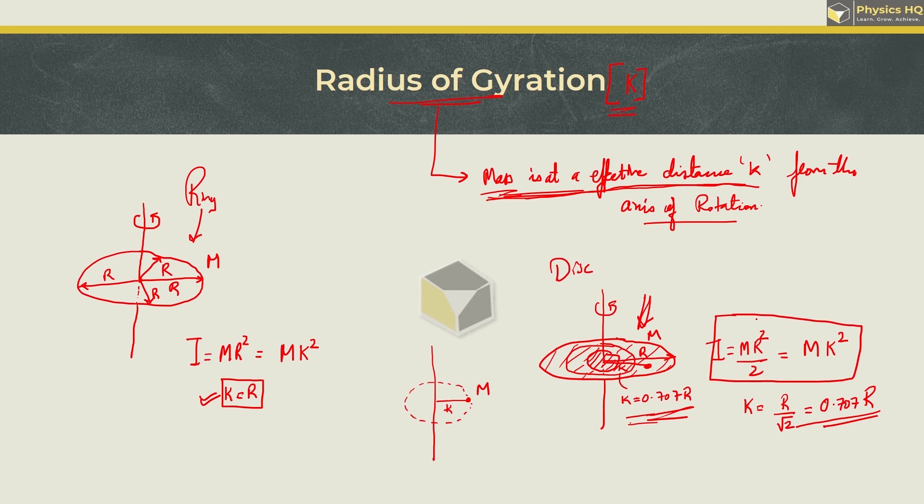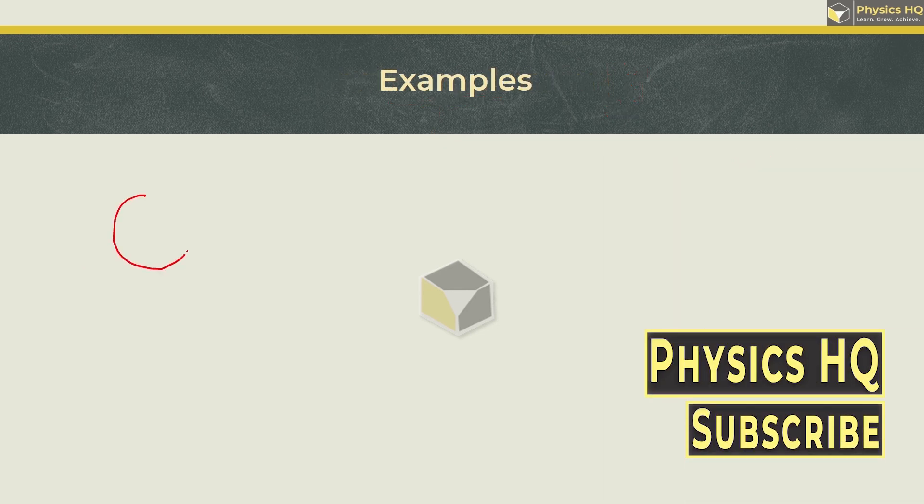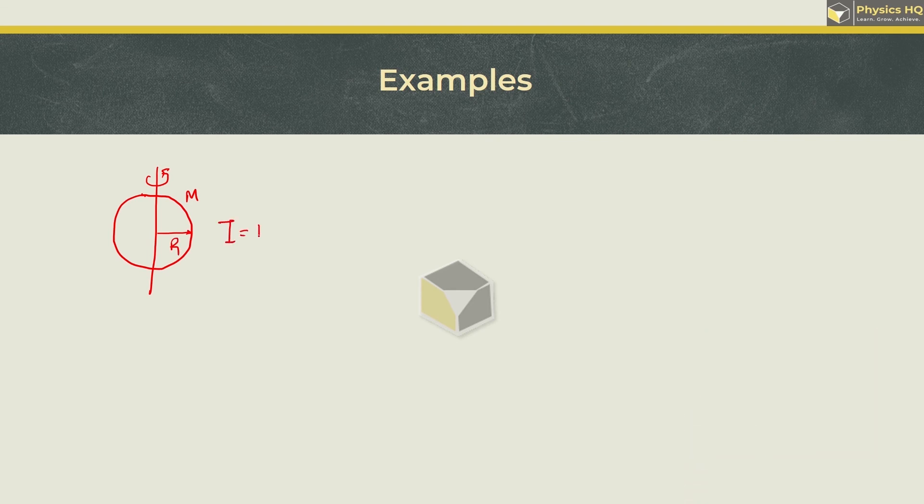Let us take few more examples. For a hollow sphere which is having mass m and radius r, the moment of inertia is given by 2 by 3 m r square, and this can be written as m into k square. Once again m gets cancelled. So we got k square is equal to 2 by 3 r square, or you can say k is equal to root of 2 by 3 r. So for this, the radius of gyration will be at some distance k which is equal to root of 2 by 3 r.